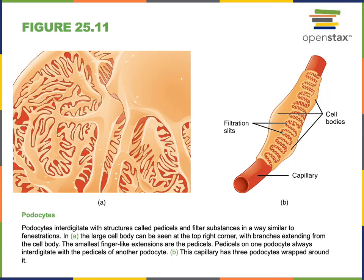Podocytes have numerous small extensions called pedicles that come together to form small filtration slits in between the pedicles. The filtration slits allow liquid with small dissolved solutes to flow into Bowman's capsule, while larger particles like the proteins in the plasma and the formed elements of blood are not able to pass through the filtration slits and are held back inside the blood.